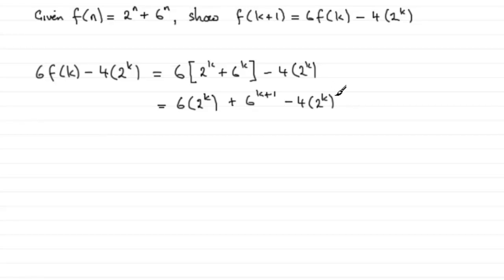Now what I can do now is I've got 6 lots of 2 to the power of k, take away 4 lots of 2 to the power of k. So that's going to be 2 lots of 2 to the power of k, and then plus 6 to the power of k plus 1.